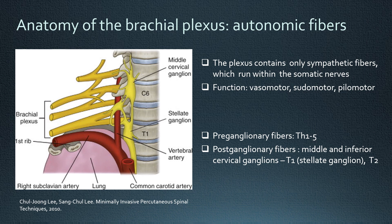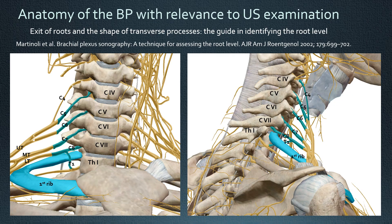The plexus also contains autonomic fibers, but they are only sympathetic fibers, and they run with the somatic nerves. Here you see a simplified anatomical view of the nerve roots as they exit the spine. This is very important from the point of view of ultrasound examination, because we use the shape of the transverse processes as a guide for the identification of the root level.